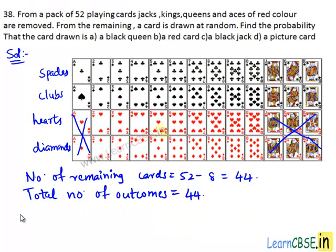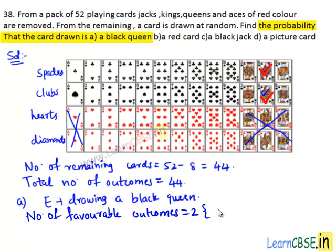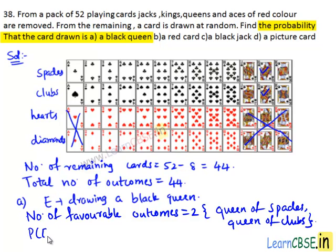Now let's see part (a). We need to find the probability that the drawn card is a black queen. Let E be the event of drawing a black queen. We have two black queens: Queen of Spades and Queen of Clubs. Number of favorable outcomes of event E equals 2. Then probability of event E equals 2 divided by 44. Here 2 is a common factor; 2 goes into 2 one time and into 44 twenty-two times. Therefore, the probability that the drawn card is a black queen is 1/22.